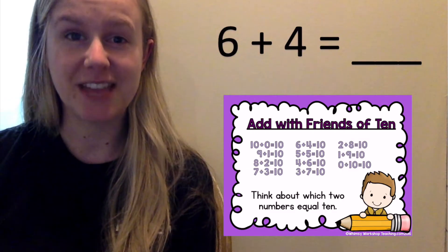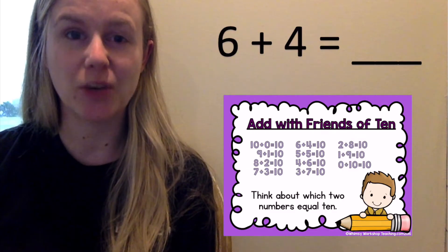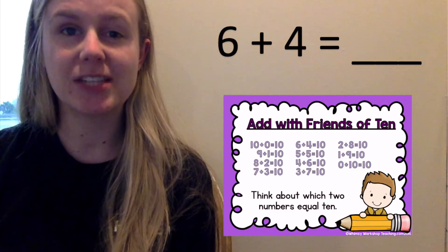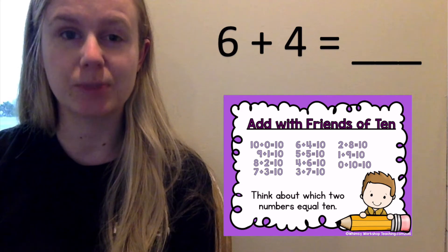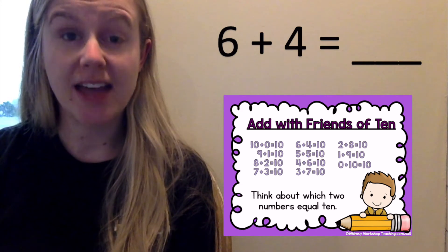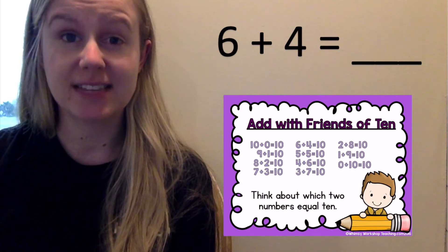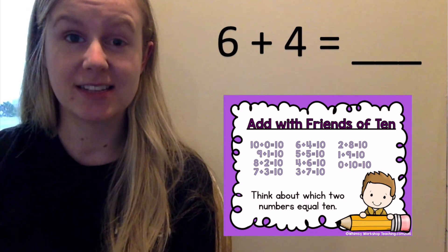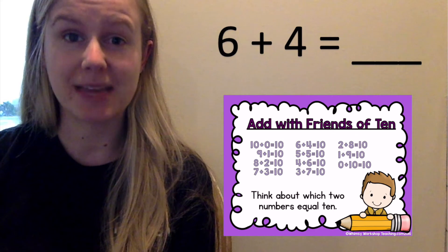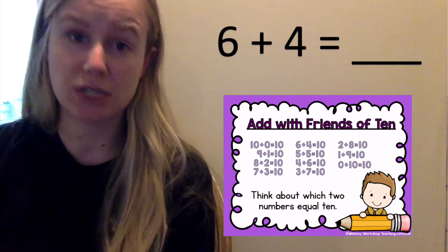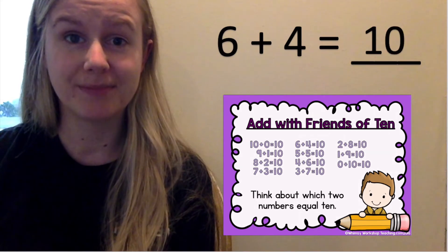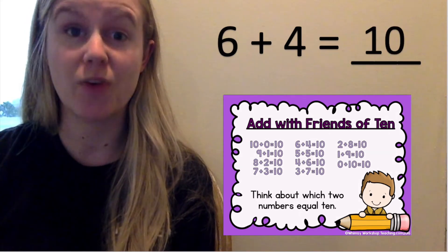Sixteen equals seven plus nine. What are our parts? Seven and nine. How do we know? Because Gus the Plus puts parts together. We can use our ten facts to solve equations quickly. Six plus four equals blank. I know that six and four is a ten fact — six and four makes ten. So six plus four equals ten. That was so fast.